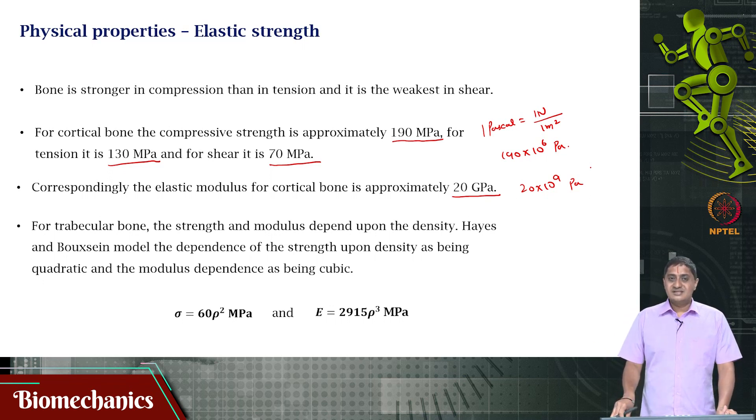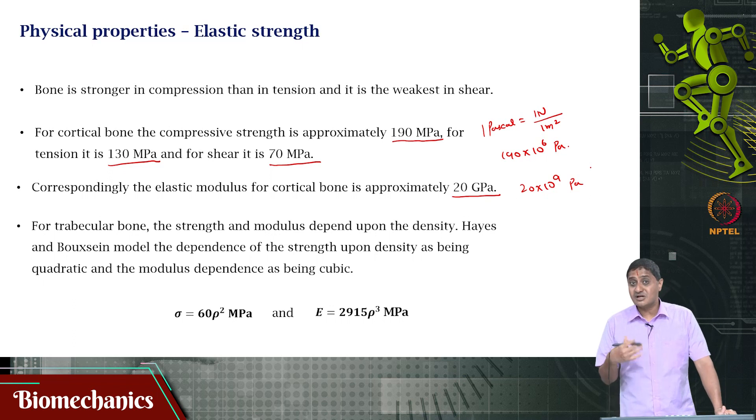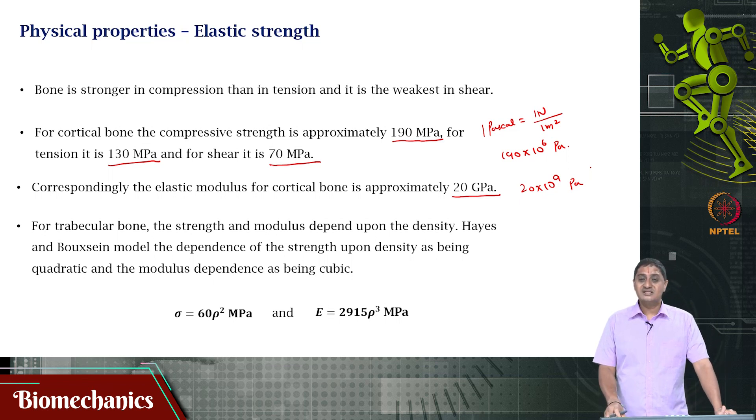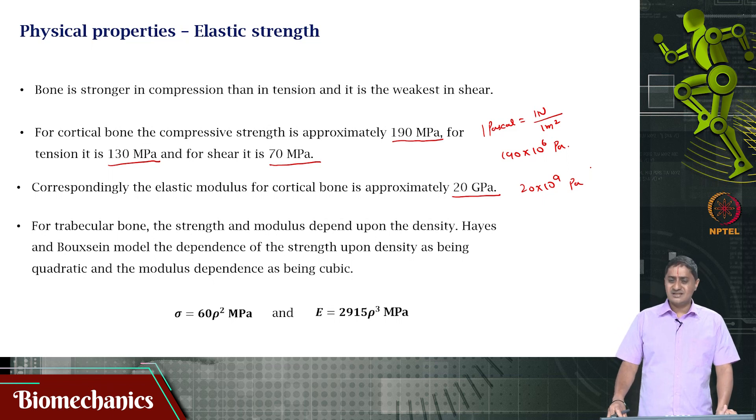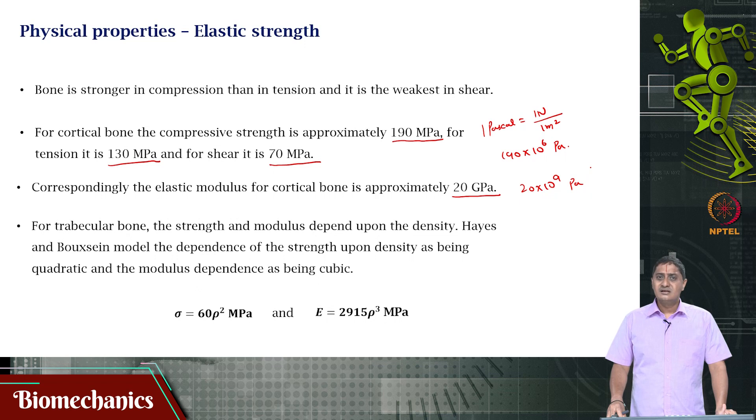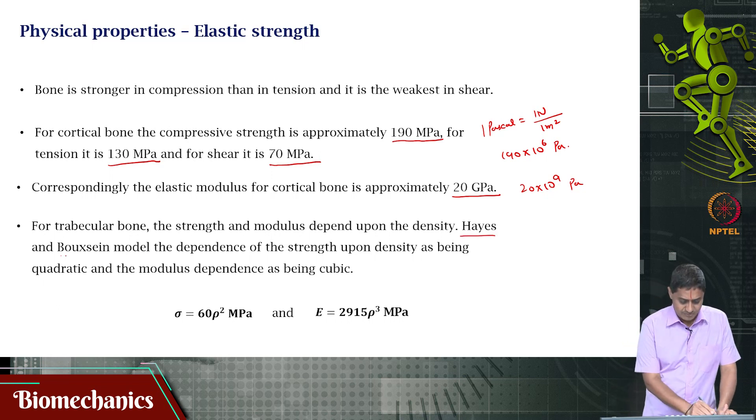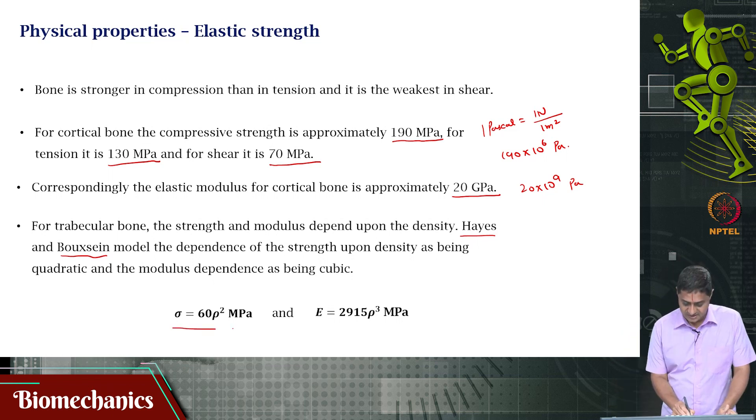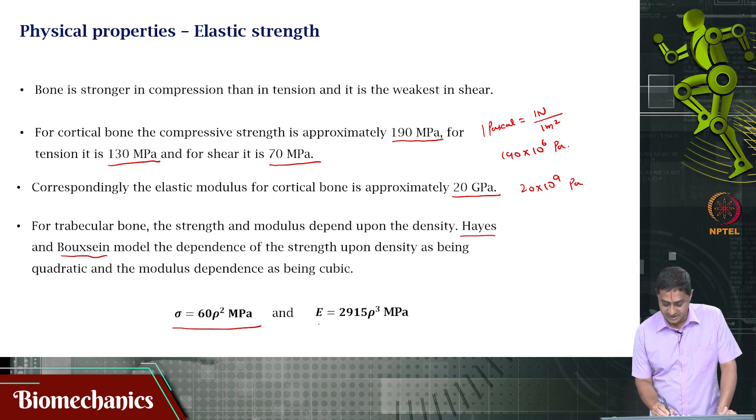For cancellous bone, the strength and modulus depend upon the density. Porosity starts to play a role. The more porosity, the less dense it is. Its strength is a function of density or porosity. There are models that have attempted to relate density and strength. One such model is the Hayes-Bouxsein model, which relates the strength to density as being quadratic and the modulus as being cubic. The elastic modulus is a function of rho cubed and the strength is a function of rho squared.